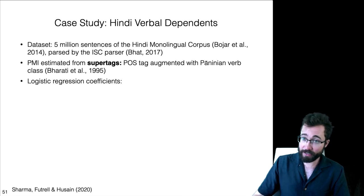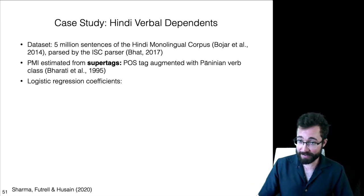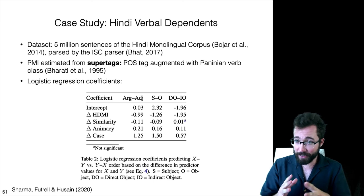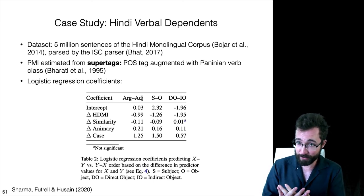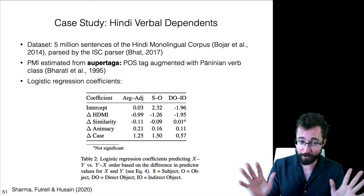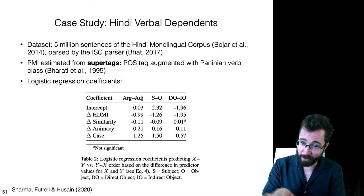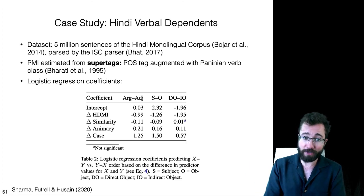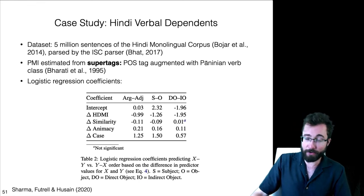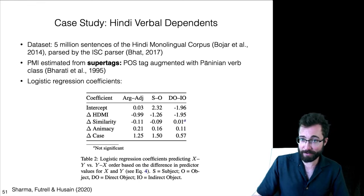And the logistic regression coefficients we get when we try to predict the order among these different dependency types are these. So a negative coefficient means that the thing with the higher value is going later in the sentence that is closer to the verb. So HDMI, that's the PMI effect with the verb. It's negative for all these comparisons. So the thing with higher PMI to the verb always goes closer to it. We also see that the animate things go earlier as expected and case marking and similarity have case marked things also go earlier. So we again see an information locality effect in this domain.